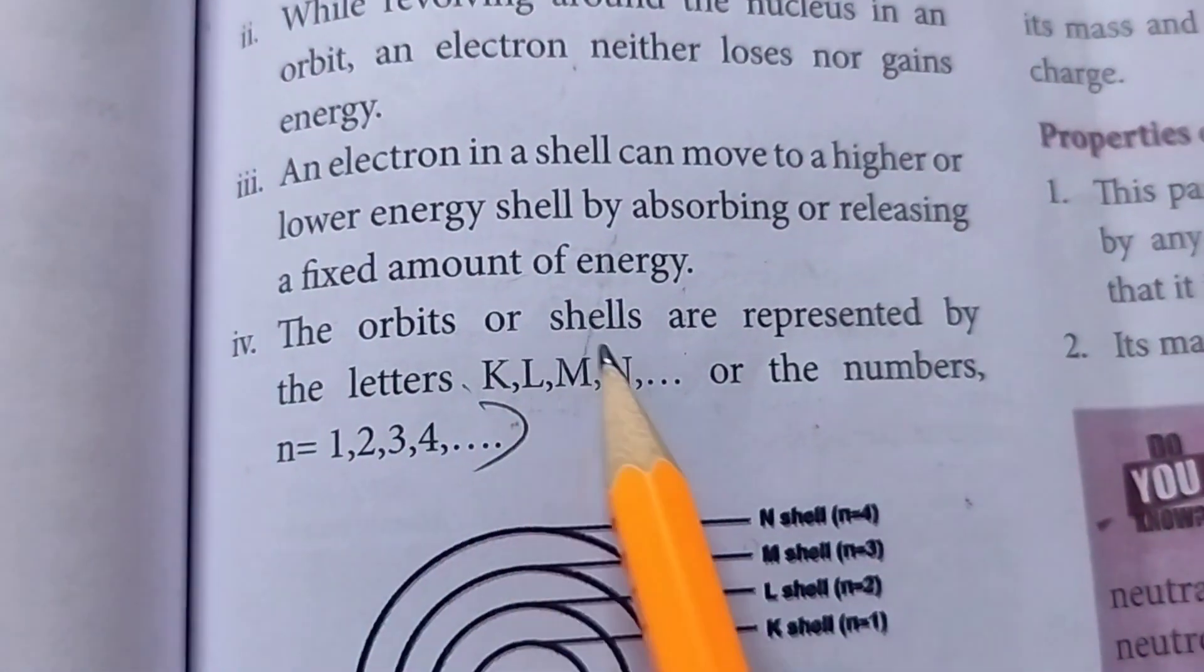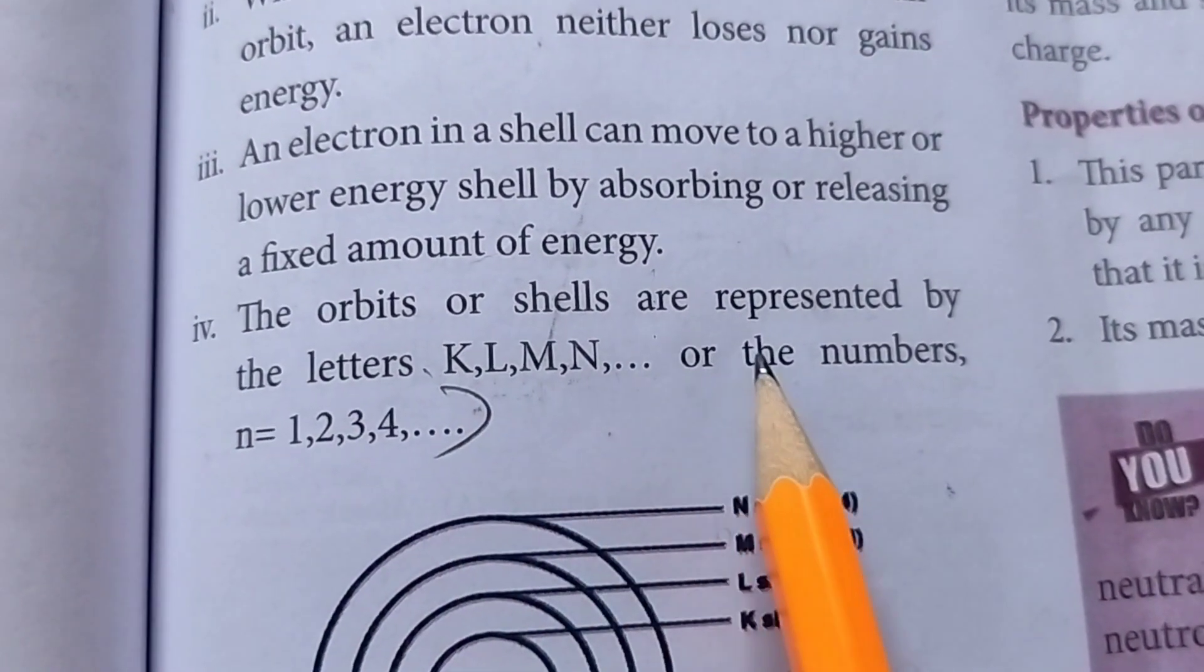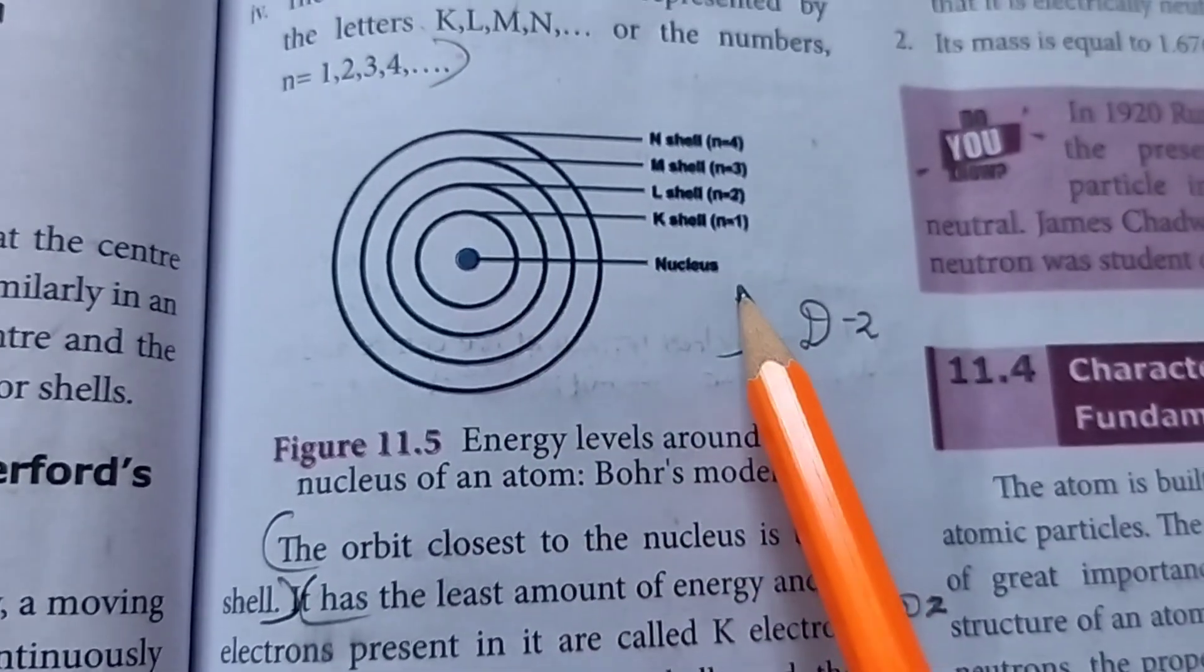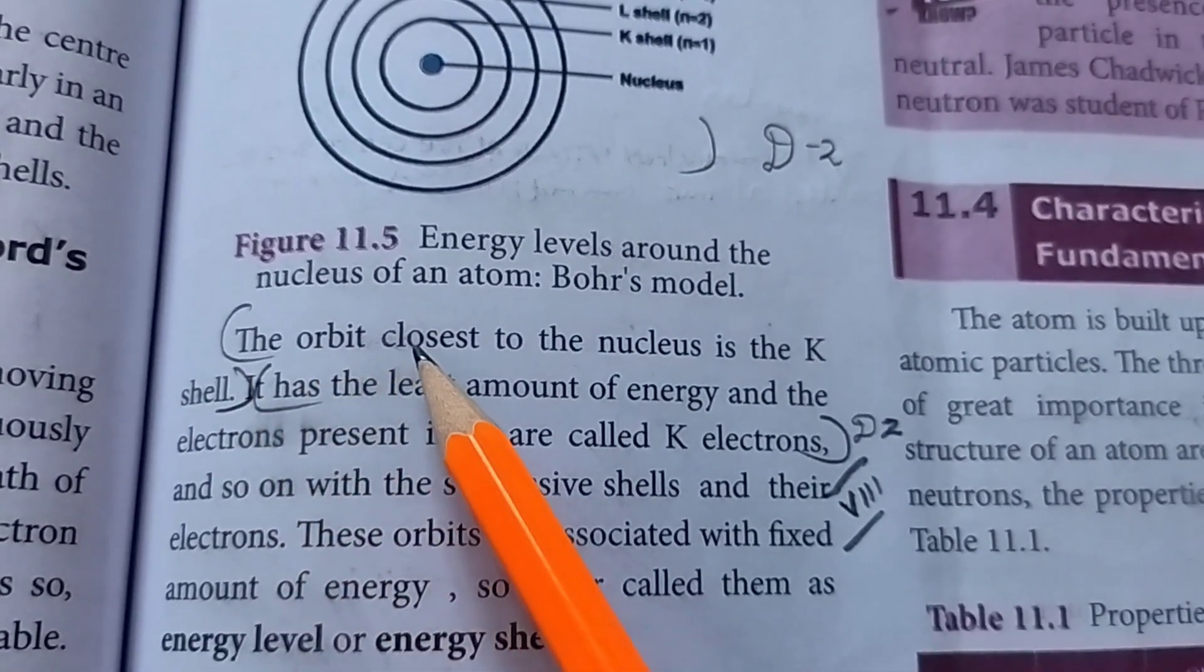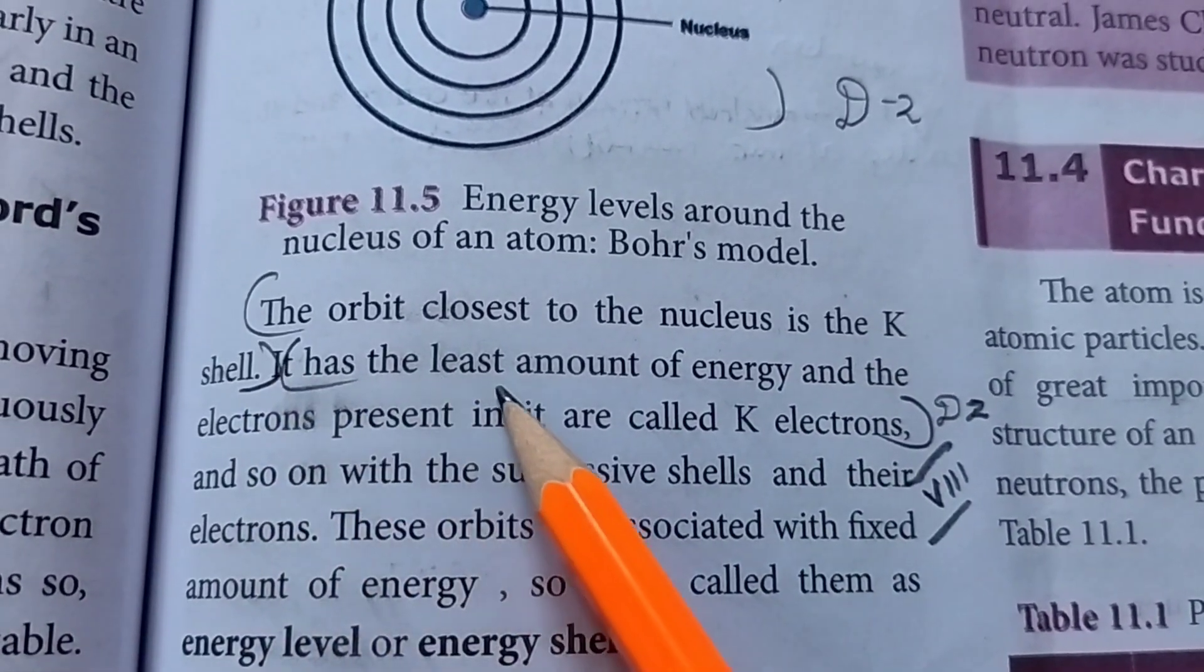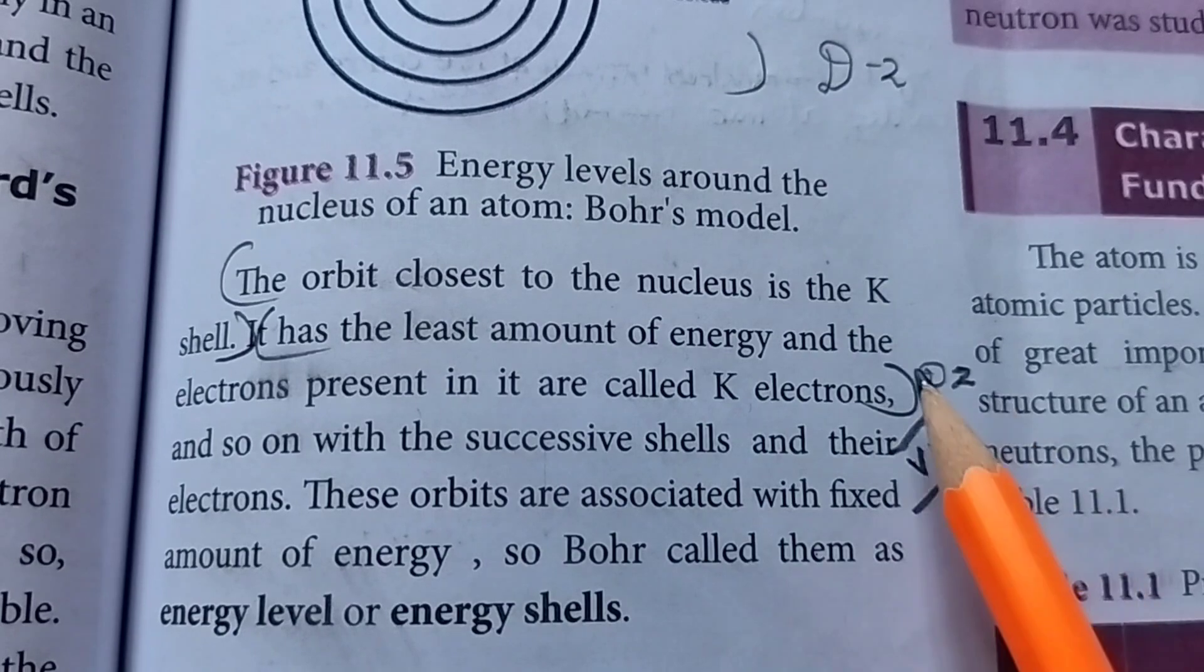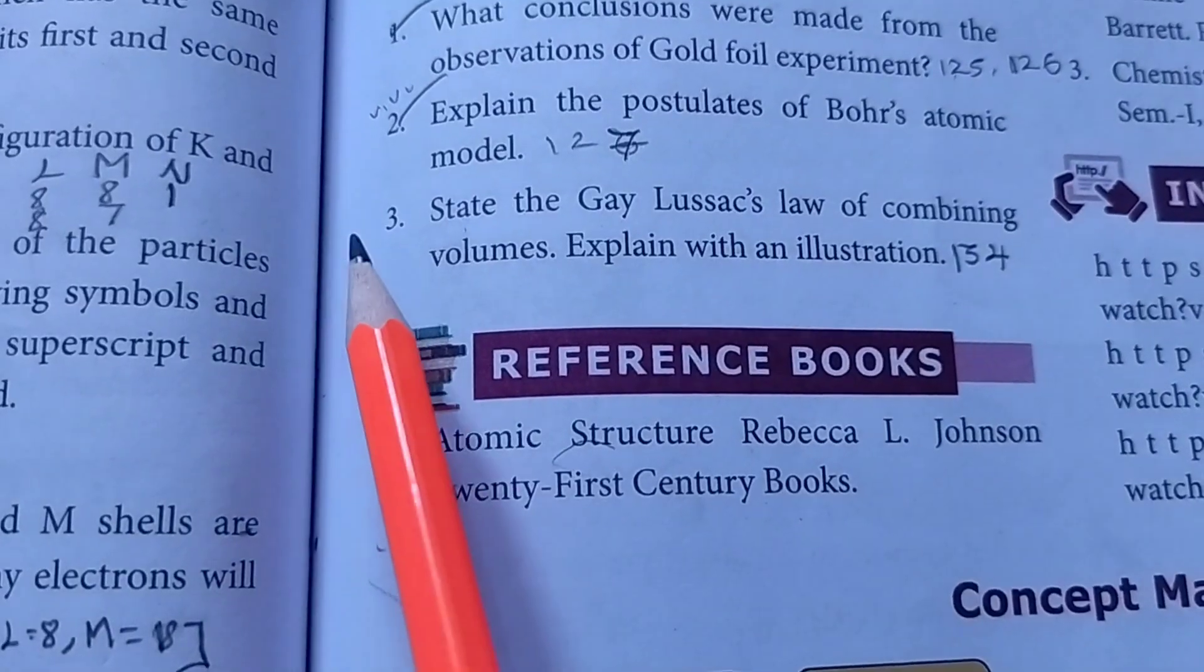Then fourth point, the orbits or shells are represented by the letters K, L, M, N or the numbers N is equal to 1, 2, 3, 4. The orbit closest to the nucleus is the K shell that has the least amount of energy and the electrons present in it are called K electrons.